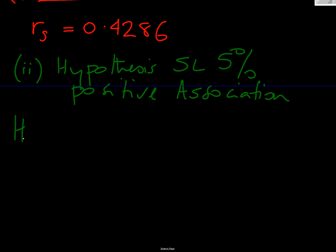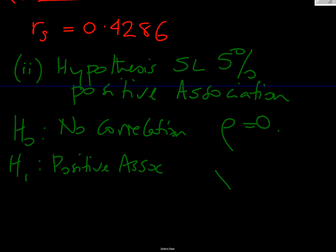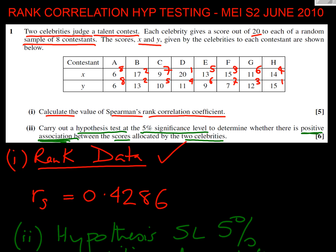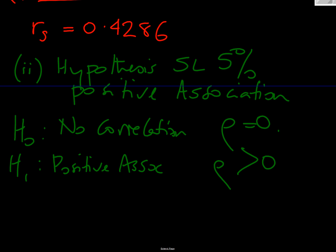So what's our H0 going to be? Well, our H0 is always that there is no correlation in any of these correlation tests. So rho equals 0. Our H1, we're in context here, they've wanted a positive association. So here we're going to have rho is greater than 0. Didn't actually ask us to give a reason, but that's why we're doing it, because we're looking for a positive association.